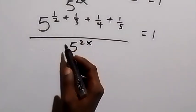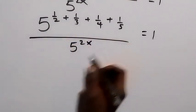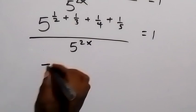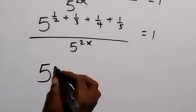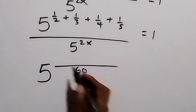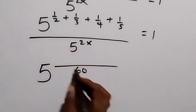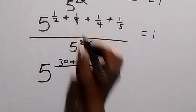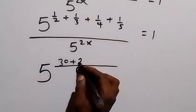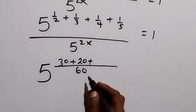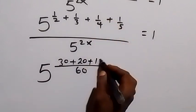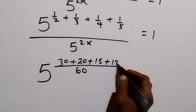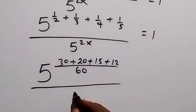In the next step we find the LCM of 2, 3, 4, and 5, which gives us 60. So we have: 2 goes into 60 thirty times, giving 30; 3 goes into 60 twenty times, giving 20; 4 goes into 60 fifteen times, giving 15; and 5 goes into 60 twelve times, giving 12. So the numerator becomes 30 + 20 + 15 + 12 = 77 over 60, divided by 5 raised to power 2x, equals 1.